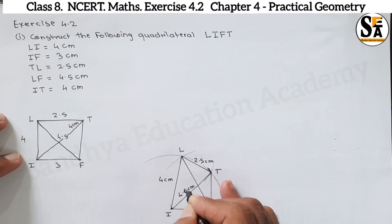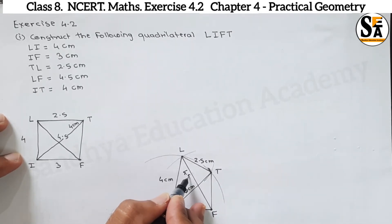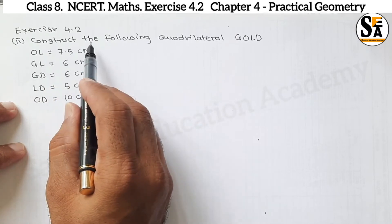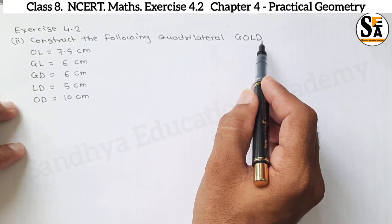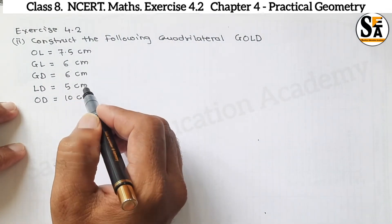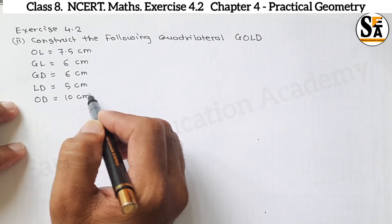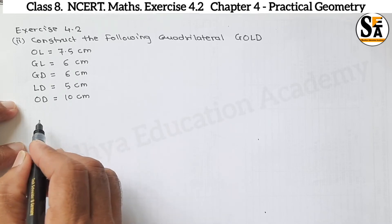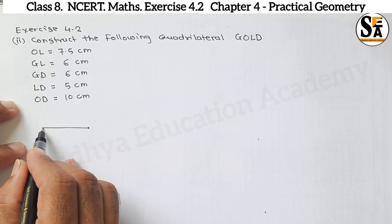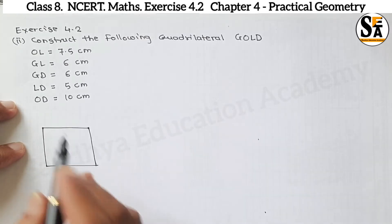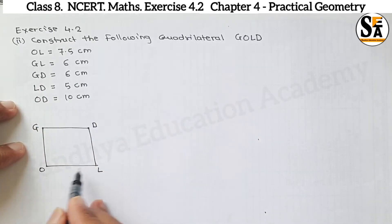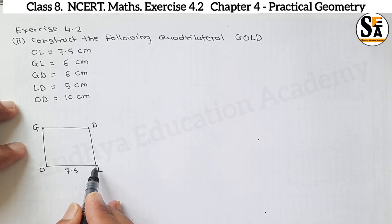Now see Question Number 2 of Exercise 4.2: Construct the following quadrilateral GOLD. Here dimensions of three sides and two diagonals are given. We will draw a rough sketch of GOLD. OL dimension is given 7.5 cm. GL is a diagonal.